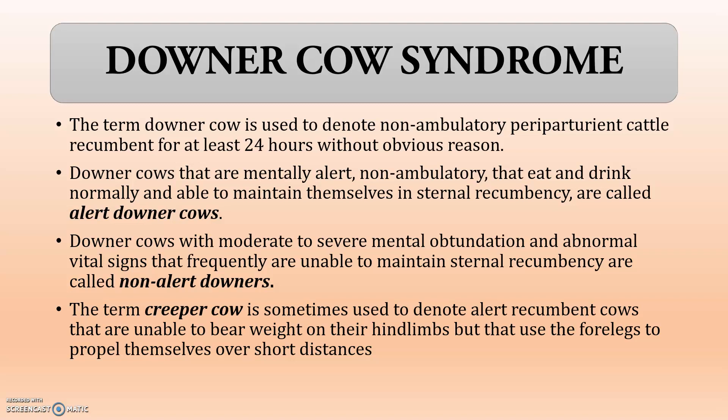What is Downer Cow Syndrome? The term Downer Cow is used to denote non-ambulatory periparturient cattle that is recumbent for at least 24 hours without obvious reasons. Depending upon the recumbency, the mental status, the hydration status, and the feeding status, we will mainly classify them into two groups: Alert Downers and Non-Alert Downers.